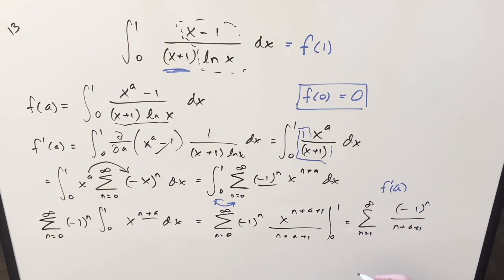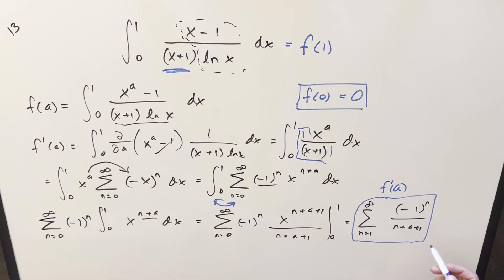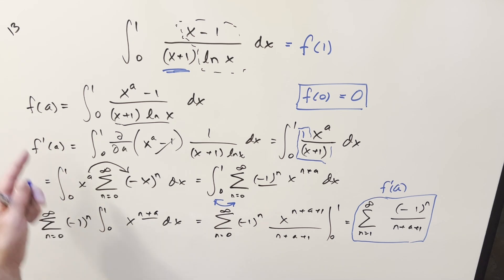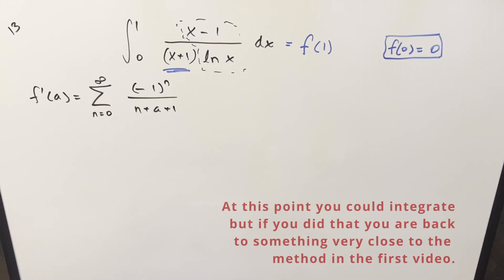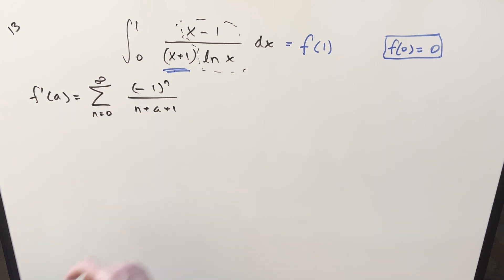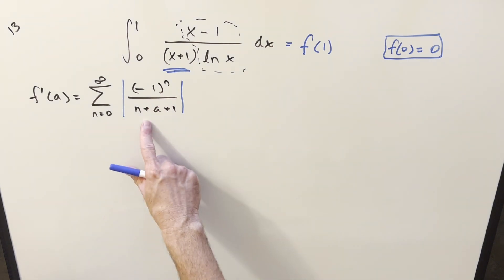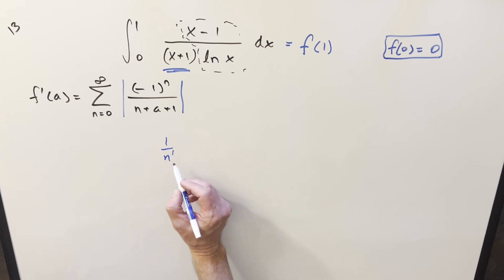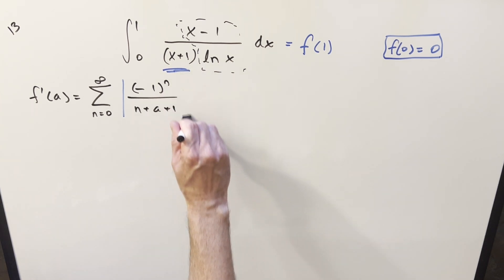Now we have f prime of a as a series. You'll notice this is essentially the alternating harmonic series shifted by a. To simplify this I want to use the digamma function. For the next step, I want to split this into even and odd terms — though I'll note this is technically a bit of a cheat, because the series isn't absolutely convergent. If you put absolute values on it, the minus 1 goes away and you get something like 1 over n, which diverges by the p-series test. So I'm going to break the rules here and proceed because I know it gets to the right answer — let me know in the comments if there's a justification.